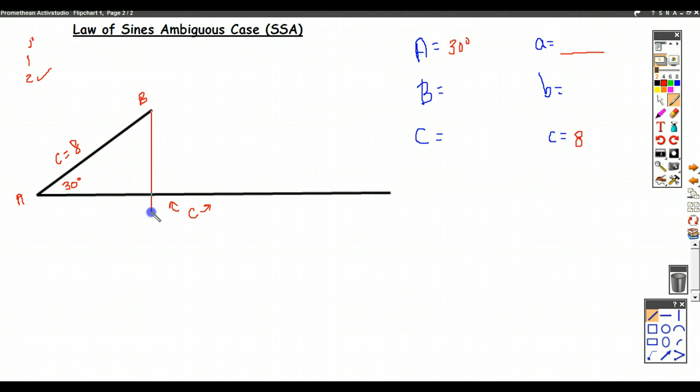So if this length here is 7, I swing it over here, there's a triangle that could exist where A is 7, but there's another one. So there's two triangles that could exist if I'm told that side A is 7.